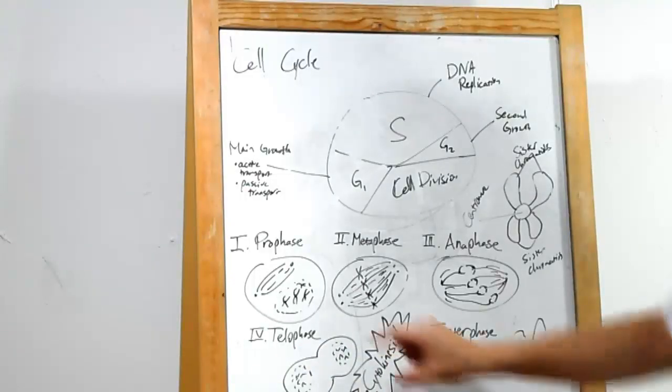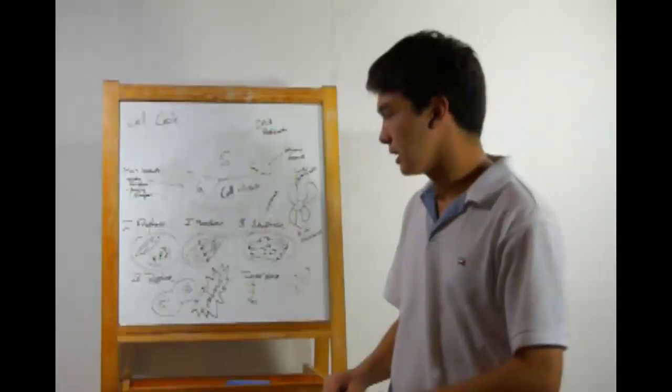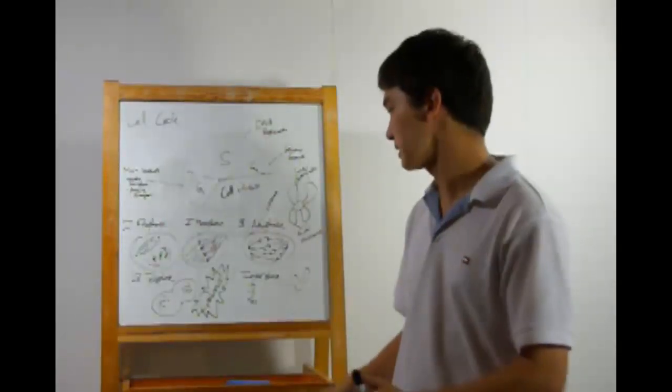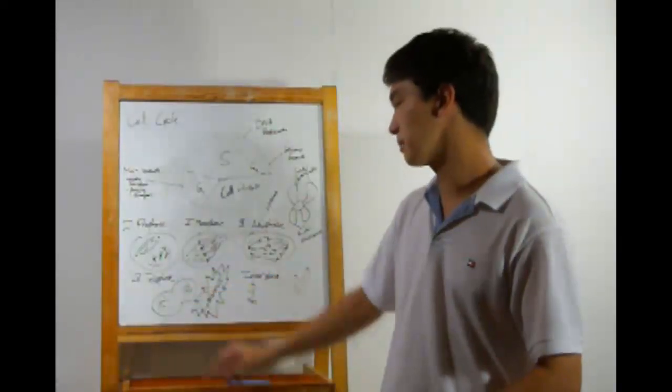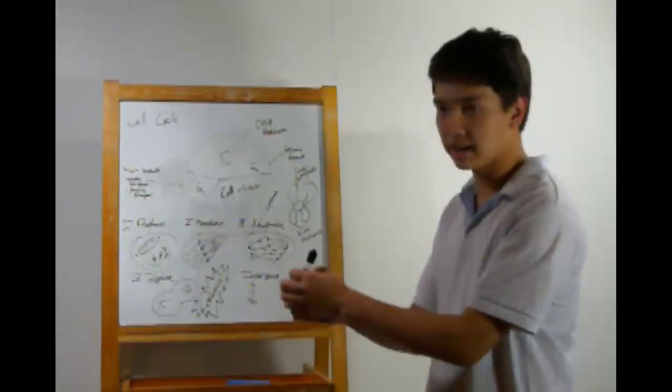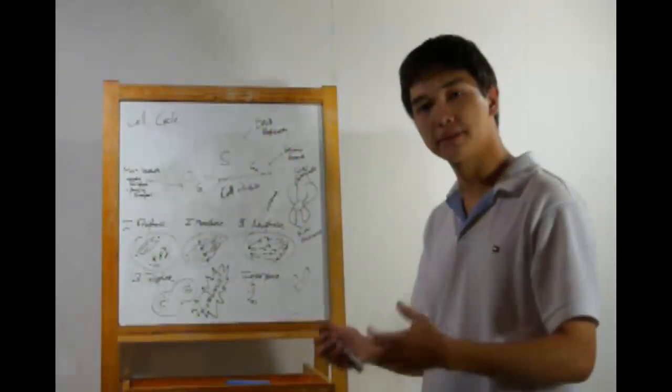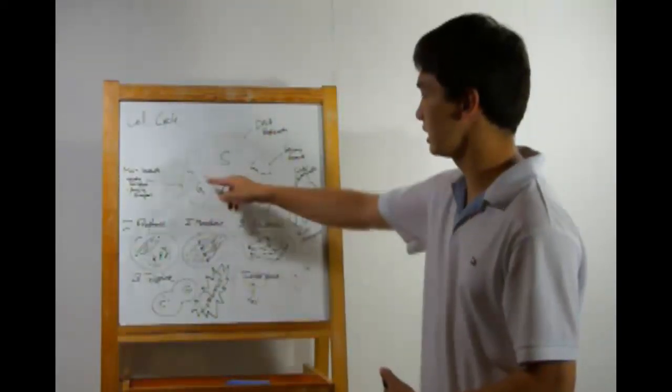In telophase, we see sort of a cleavage starting to form. It's beginning to split off into two separate cells, and the nuclear envelope for each cell begins to form. Then we have cytokinesis, the actual pulling apart, and we have two separate cells, which go into the G1 phase.